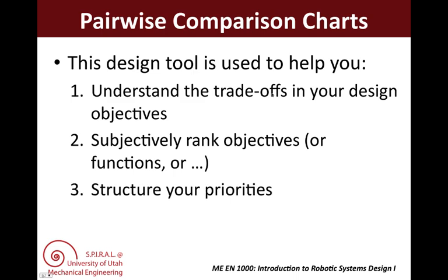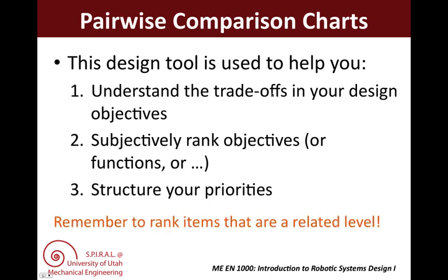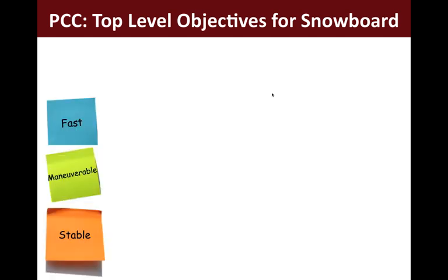We can use PCCs for subjective rankings of any related groups of items. For instance, you will also use them to rank functions in terms of difficulty. It is important to remember, just as with morph charts, to apply this tool to rank items that are at a related level. For instance, we could use a PCC to rank the top level objectives for a new snowboard design. Our three top objectives might be fast, maneuverable, and stable.